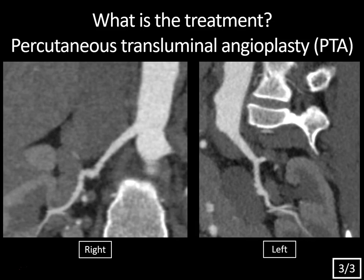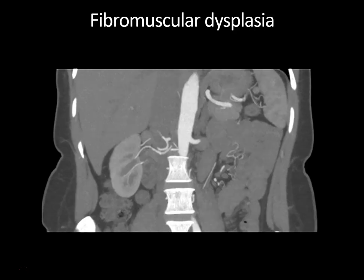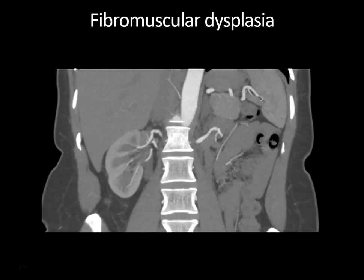Asymptomatic patients are often just followed. This is a case where the curved planar reformats and 3D volume rendered images actually show the disease better than the standard MIPs. On these coronal MIP images, you can see the beaded appearance of the renal arteries bilaterally, but it's much more apparent on the volume rendered and CPR images in this case.